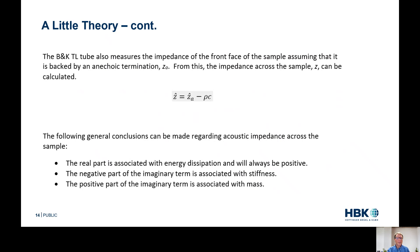We can also measure the impedance across the sample. The 4206T measures something called Z sub A — the impedance at the front face of the sample, assuming an anechoic condition behind it. If we want to measure the impedance across the sample from the front surface to the back surface, that equals Z sub A minus rho C, which is the impedance of an anechoic termination — the assumed boundary condition.